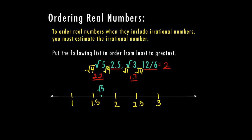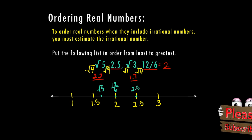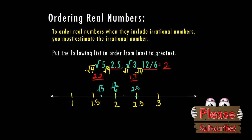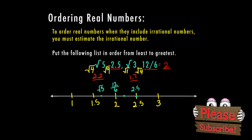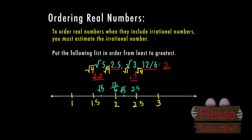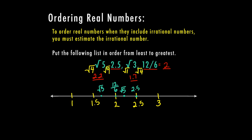Then we have the number two, which is right here on our number line — so that's going to be your 12 sixths. Then we have two and a half, also right there on the number line. Then we have the square root of five, which was 2.2, so that's going to go between two and two and a half, a little bit closer to two. So now that we have them placed, we would list them out: square root of three, 12 sixths, square root of five, and two and a half. And we have successfully listed them in order from least to greatest.